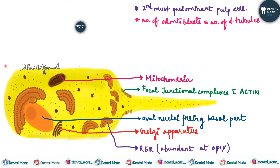They also have mitochondria and focal junctional complexes in which actin filaments are inserted, along with long cell processes. These cell processes do not contain any endoplasmic reticulum, mitochondria, or vesicles.